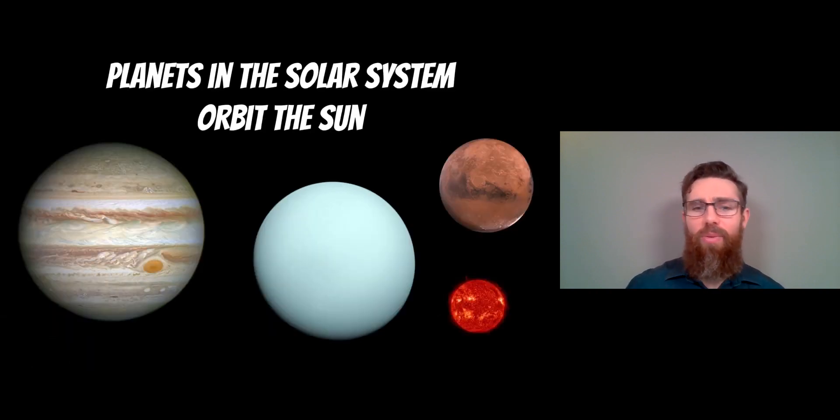So if we think about the normal planets in the solar system, they all orbit around the sun. So we've got a selection of planets here. When we think about a planet, they orbit the sun.